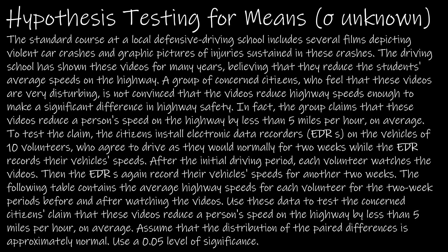This is the most difficult part of this question because it's worded weirdly — the null and alternative hypotheses are the hardest to come up with. We're saying the null hypothesis is that the mean difference equals negative five. Why? We're talking about reducing speed by less than five miles per hour. You might think the alternative is mean difference less than negative five, but values less than negative five — like negative six, negative seven — would actually mean a reduction of more than five. So the alternative is: mean difference is greater than negative five.